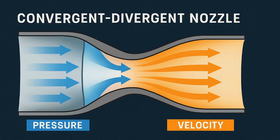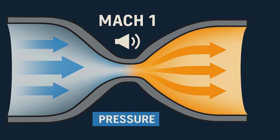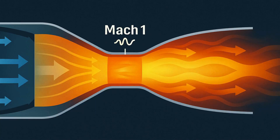After the turbines extract energy, the exhaust flows into a convergent-divergent nozzle. In the narrowing section, pressure drops and velocity rises until the gas reaches Mach 1 at the throat. As the passage widens, the gas expands further and accelerates to supersonic speeds, producing a high-speed jet. This exhaust jet pushes against the surrounding air and, by Newton's third law, propels the engine and the aircraft forward.